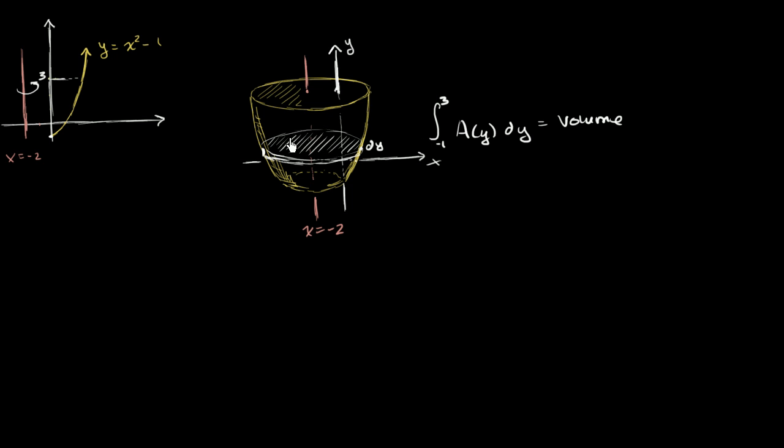So the key here is to figure out what the area of each of these disks is as a function of y. We know that area as a function of y is just going to be π times radius as a function of y squared. So the real key is, what is the radius as a function of y?